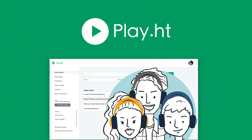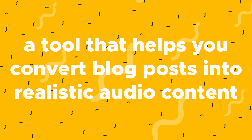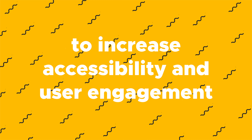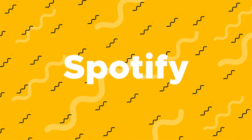What's going on? It's your girl Vanessa from AppSumo, and today I'm going to tell you about PlayHT, a tool that helps you convert blog posts into realistic audio content to increase accessibility and user engagement, and save you loads of time. Plus, you can create an RSS feed and publish your audio as a podcast on iTunes, SoundCloud, and Spotify to expand your reach.